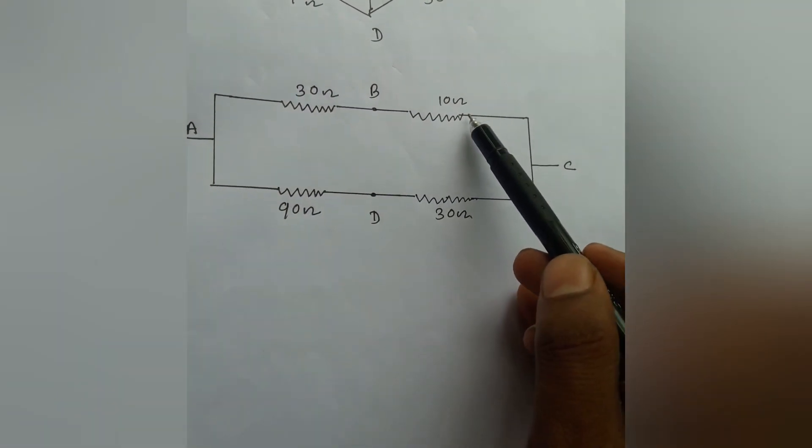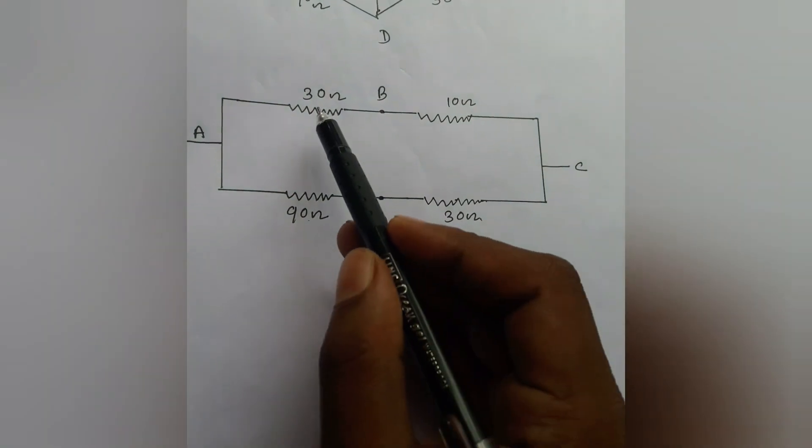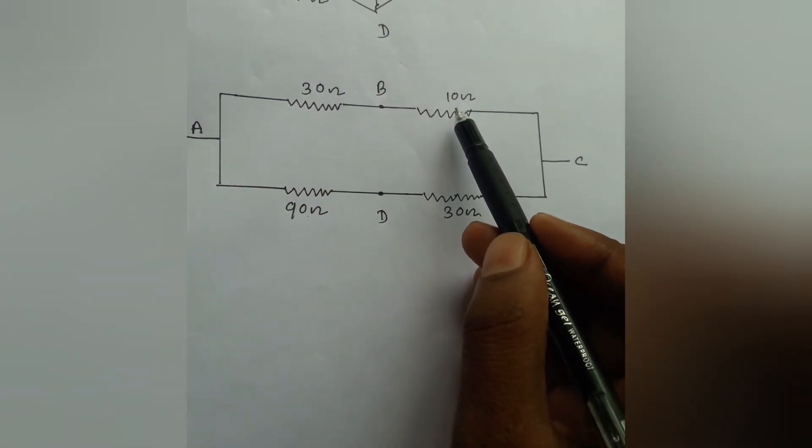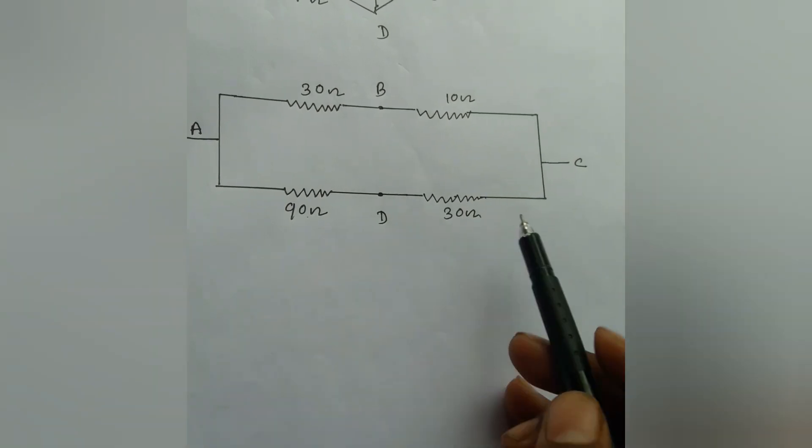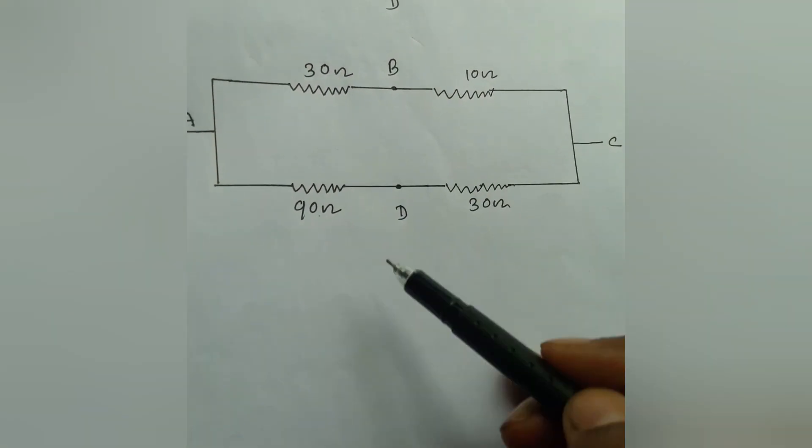30 Ohm and 10 Ohm are in series. Also 90 Ohm and 30 Ohm are in series. We see that 30 plus 10 is 40 and 90 plus 30 is 120. Therefore, these two resistances are in parallel.